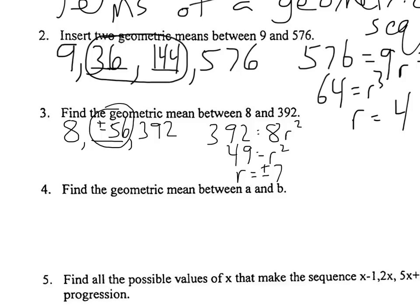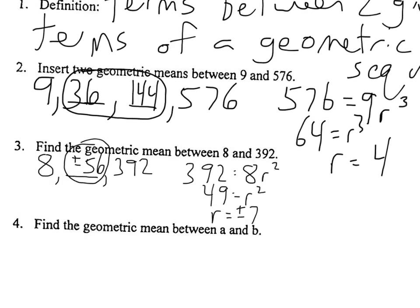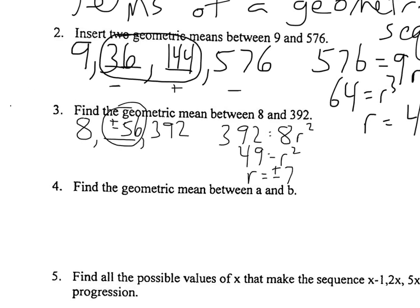On the previous problem, r couldn't be negative 4. Think about why: multiplying 9 by a negative gives a negative, multiply that by a negative gives a positive, multiply that by a negative — 576 would have to be negative, and it's not. On this one, multiplying 8 by negative 7 gives a negative, and multiplying that by a negative gives a positive, as expected. So when the exponent is even, that adds an extra thing to think about with the plus or minus.